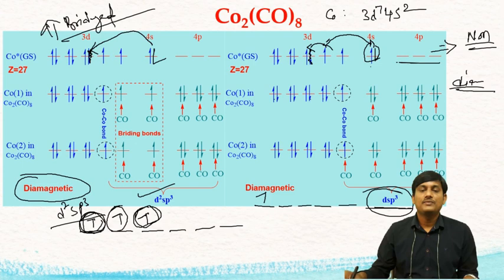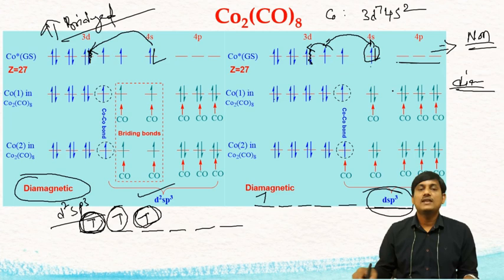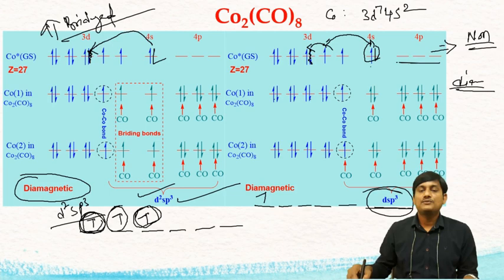The key difference between bridged and non-bridged structure: in the bridged structure, there are 2 bridged CO ligands and 6 terminal CO ligands, with d²sp³ hybridization. In the non-bridged structure, all CO ligands are terminal, and the hybridization is dsp³.